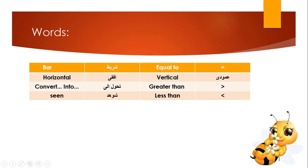Important vocabulary for this lesson: bar = شريط, horizontal = أفقي, convert = تحول إلى (convert something into another format), seen = شوهده, vertical = عمودي, equal to (symbol =), greater than (symbol >), less than (symbol <). Thank you for watching. السلام عليكم ورحمة الله وبركاته.